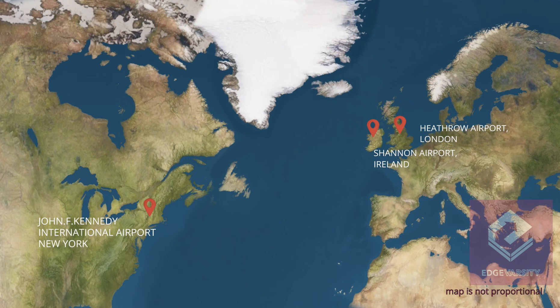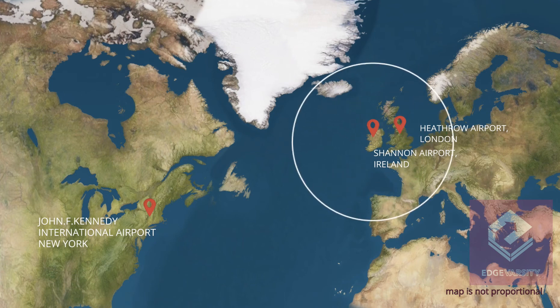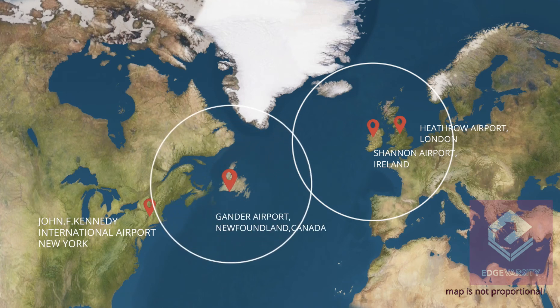Like before, let's draw a circle with 120 minutes flying distance as radius with Shannon Airport as the center. Similarly, let's draw a 120-minute circle with Gander as the center. It's obvious from the map that both circles cover a large geographical area and, more importantly, both circles overlap. With this, it is possible to get a direct flight path between LHR and JFK.